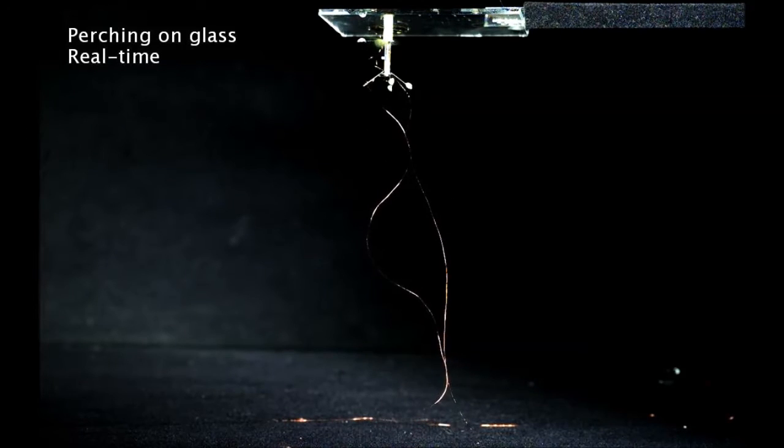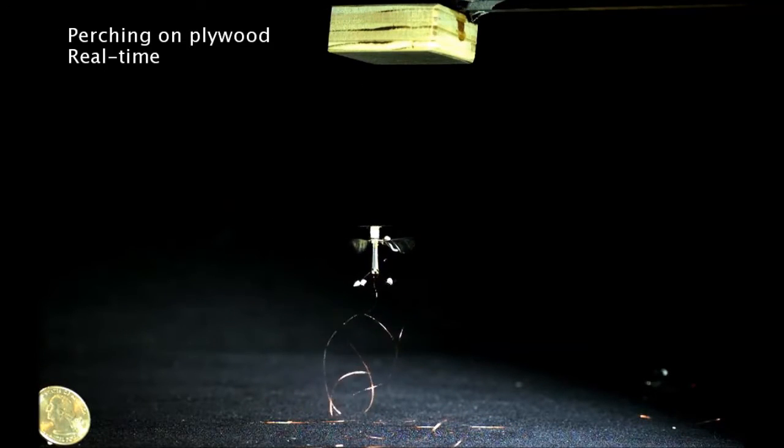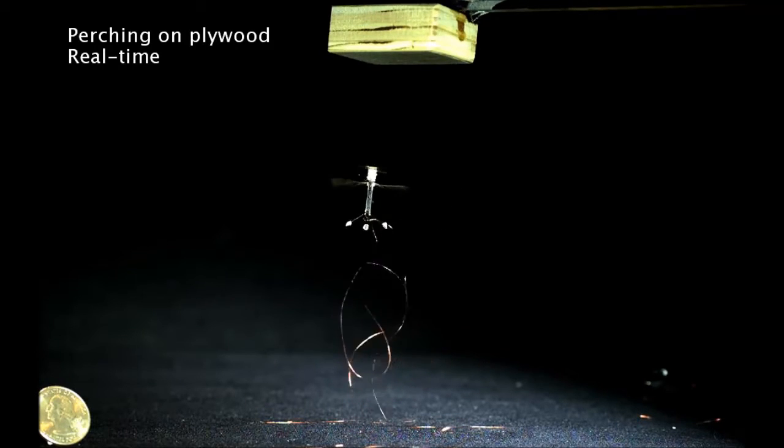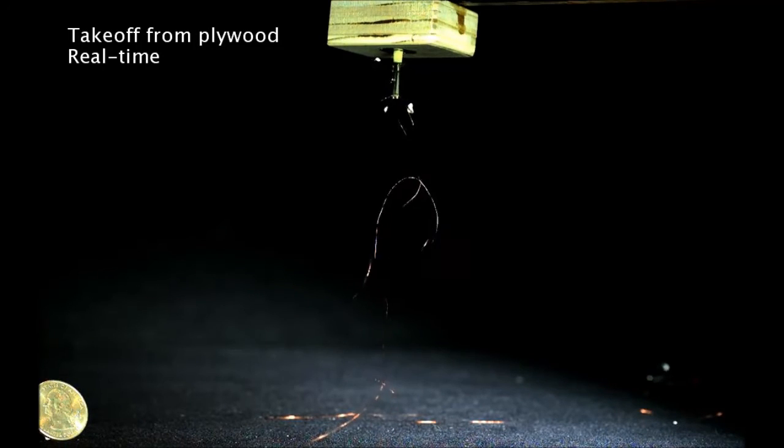But the drawback is that they're very inefficient at flying. When you perch, though, you can effectively reduce that power consumption dramatically, perhaps even down to zero. So it's really an energy savings that could hypothetically substantially increase the mission lifetime for these types of robots.